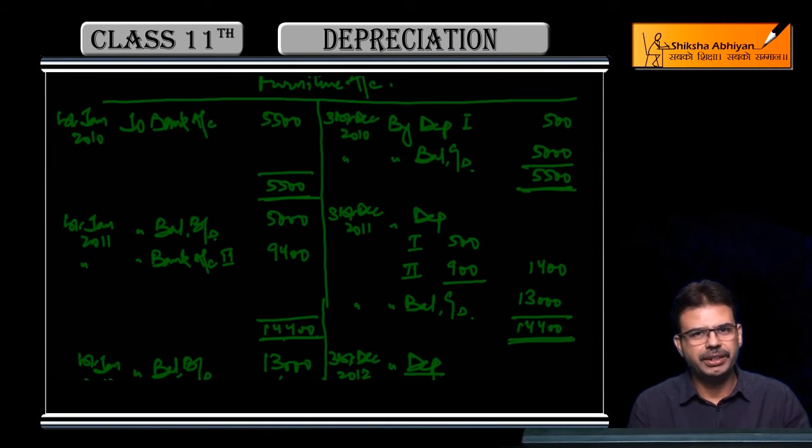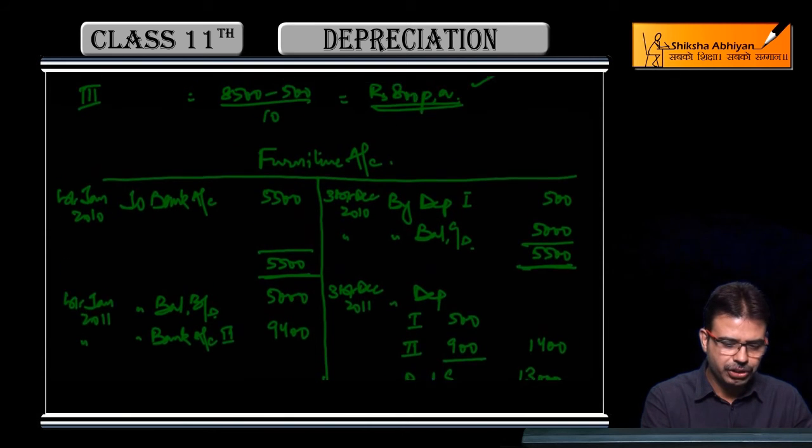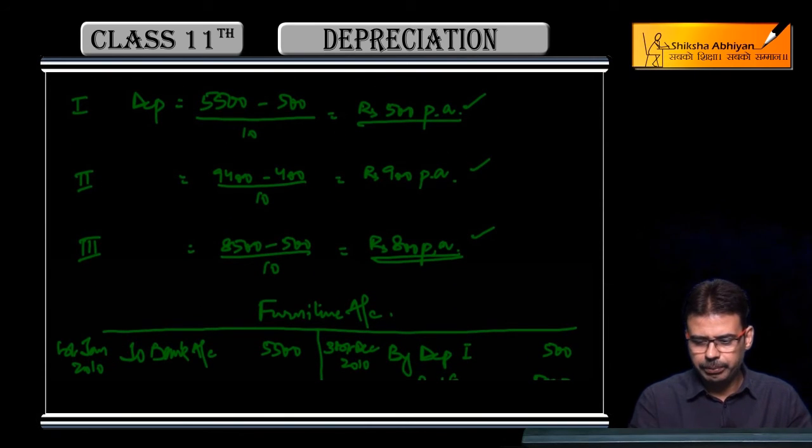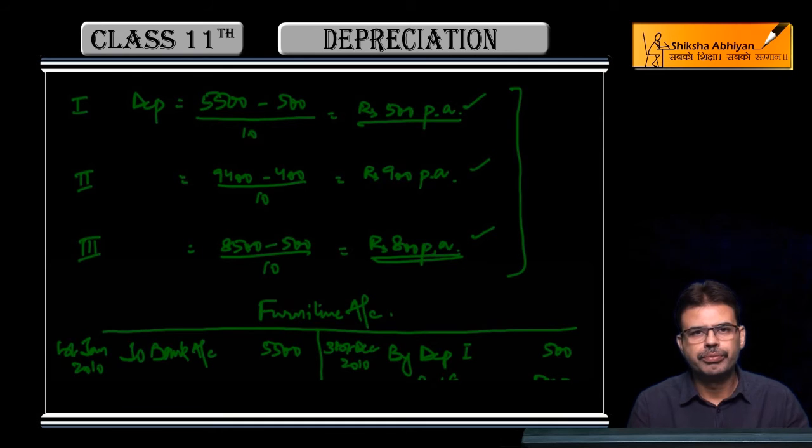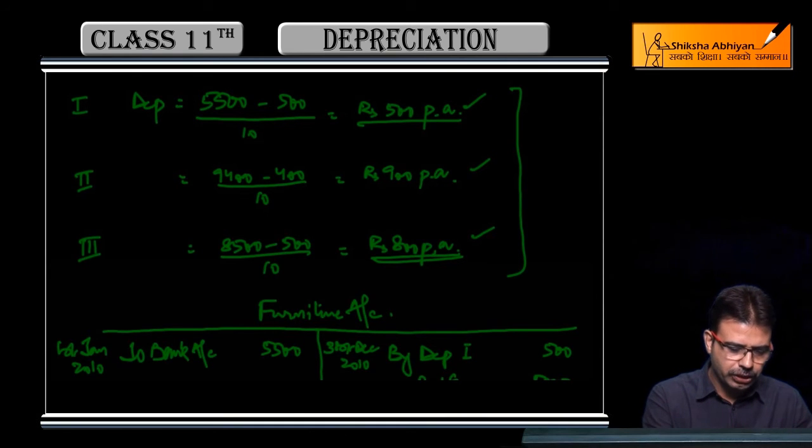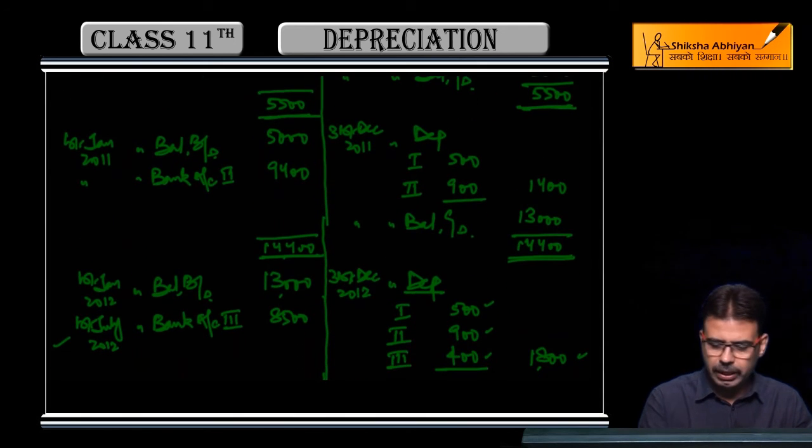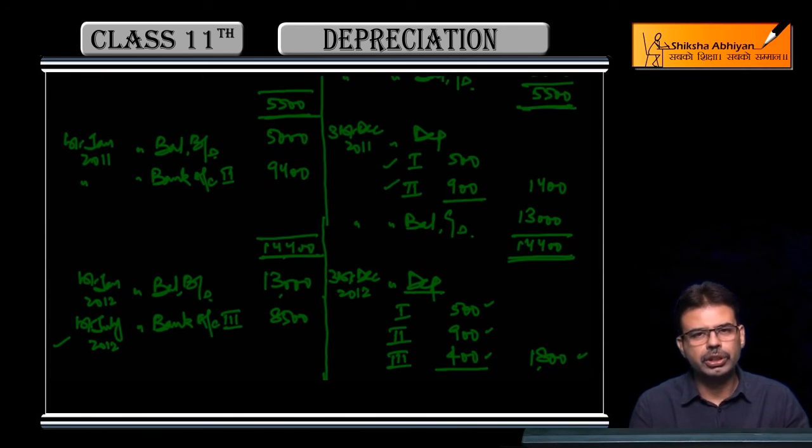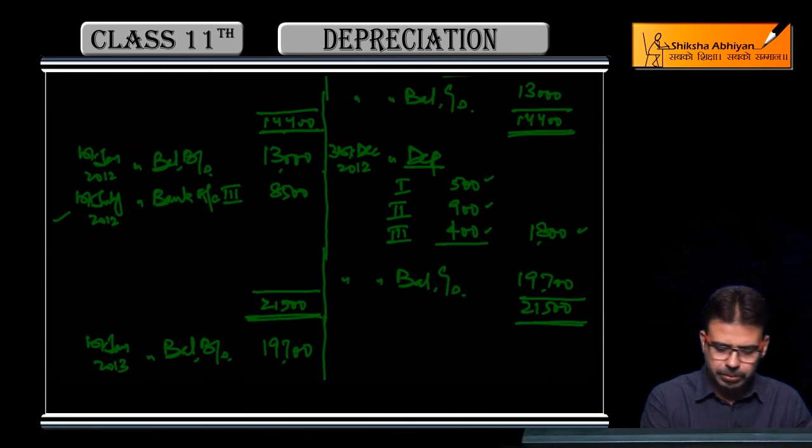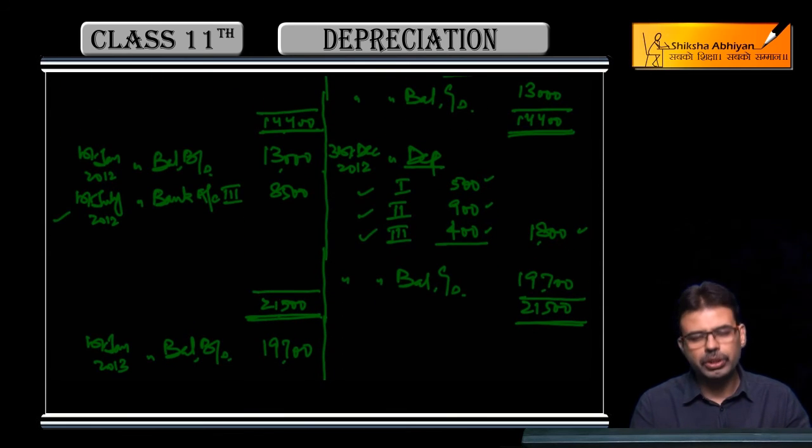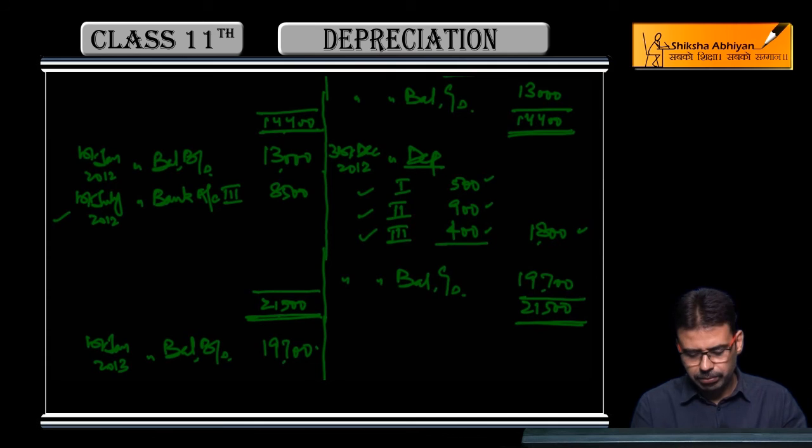Got it? First, we calculated annual depreciation for all three types of furniture, and then made the account year-wise. In the first year's account, only the first furniture existed, so only its depreciation applied. In the second year's account, first and second both existed, so both depreciations applied. In the third year, we also purchased the third one, so all three depreciations applied and we found the balance. Okay, got it, done.